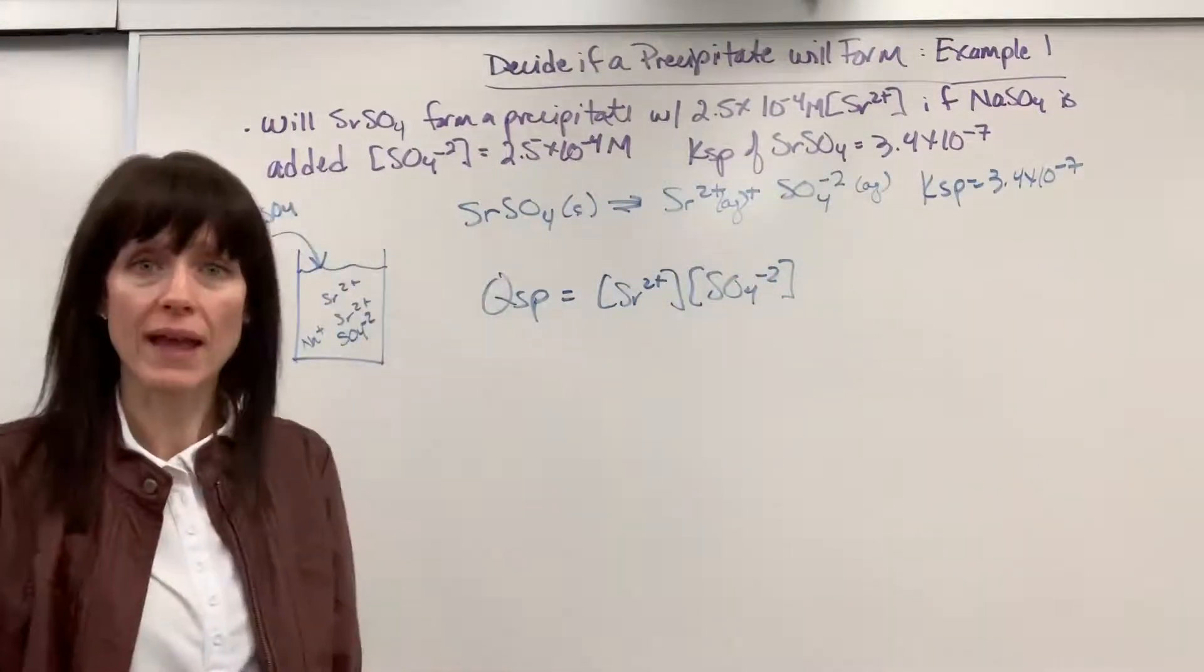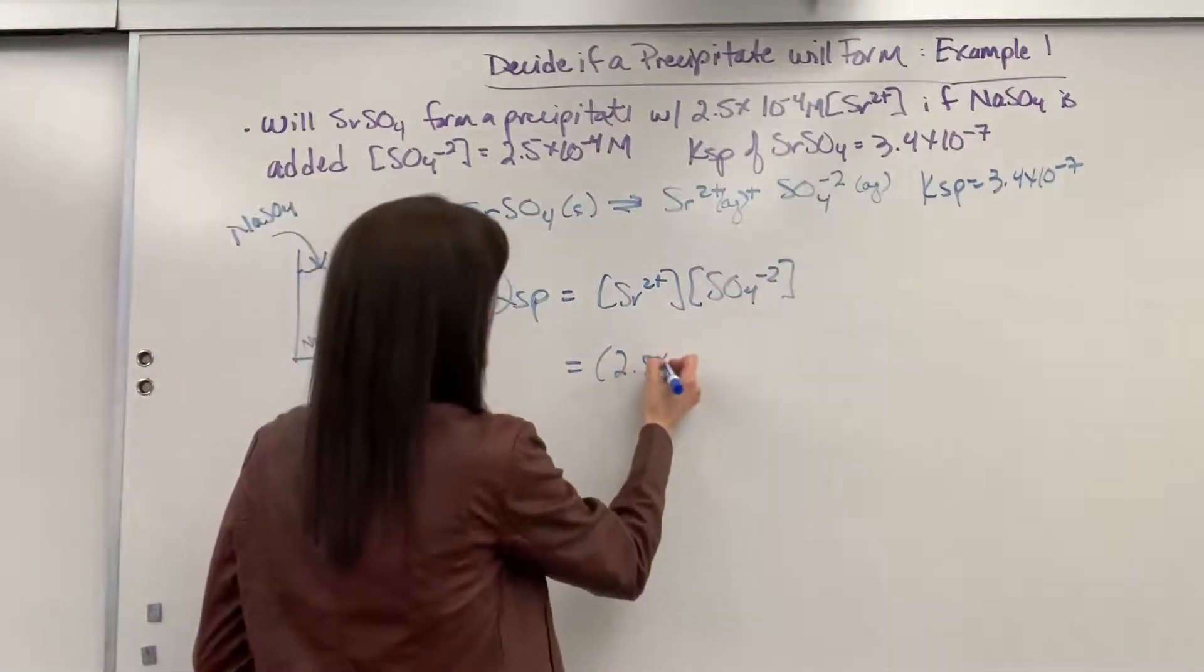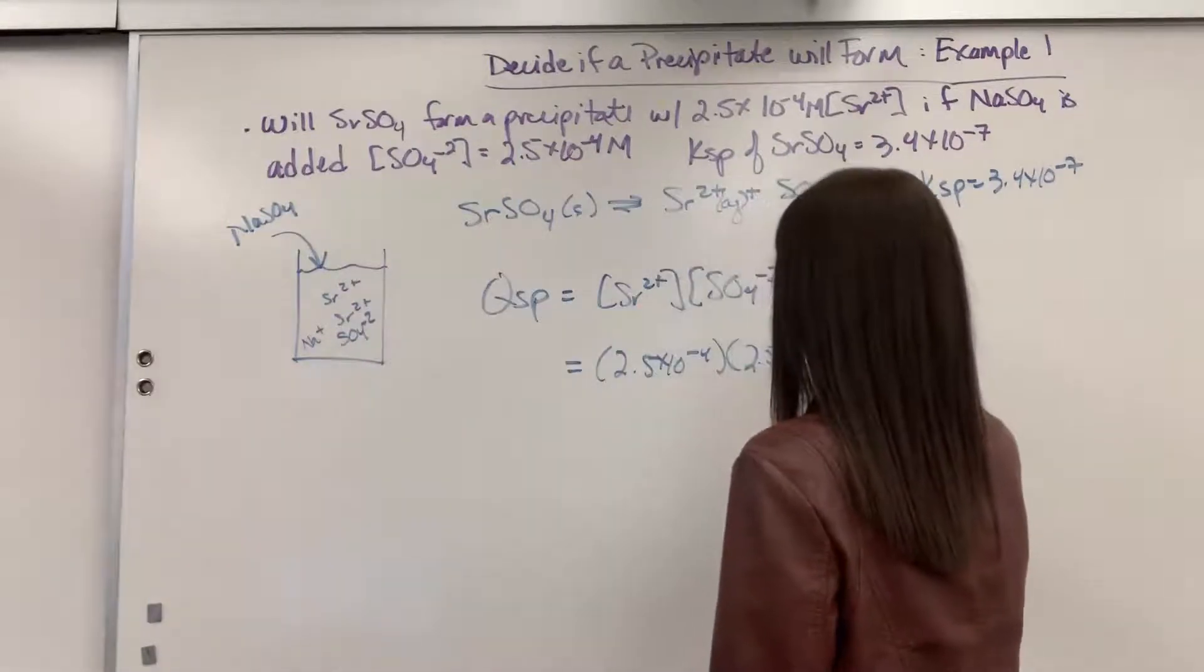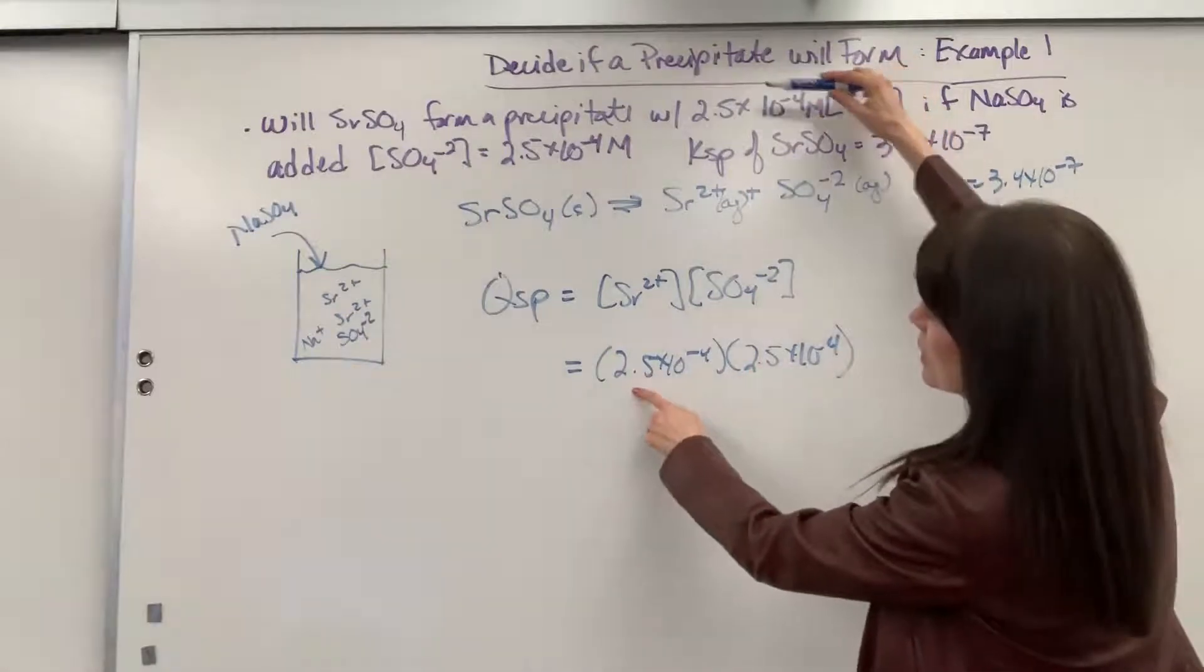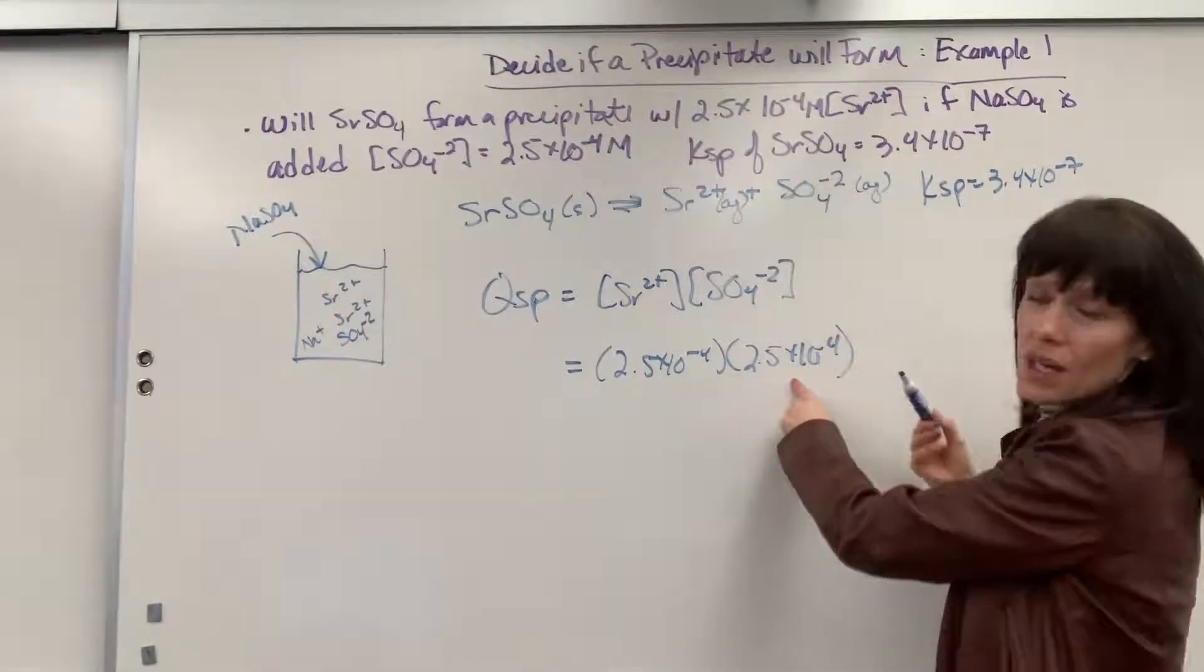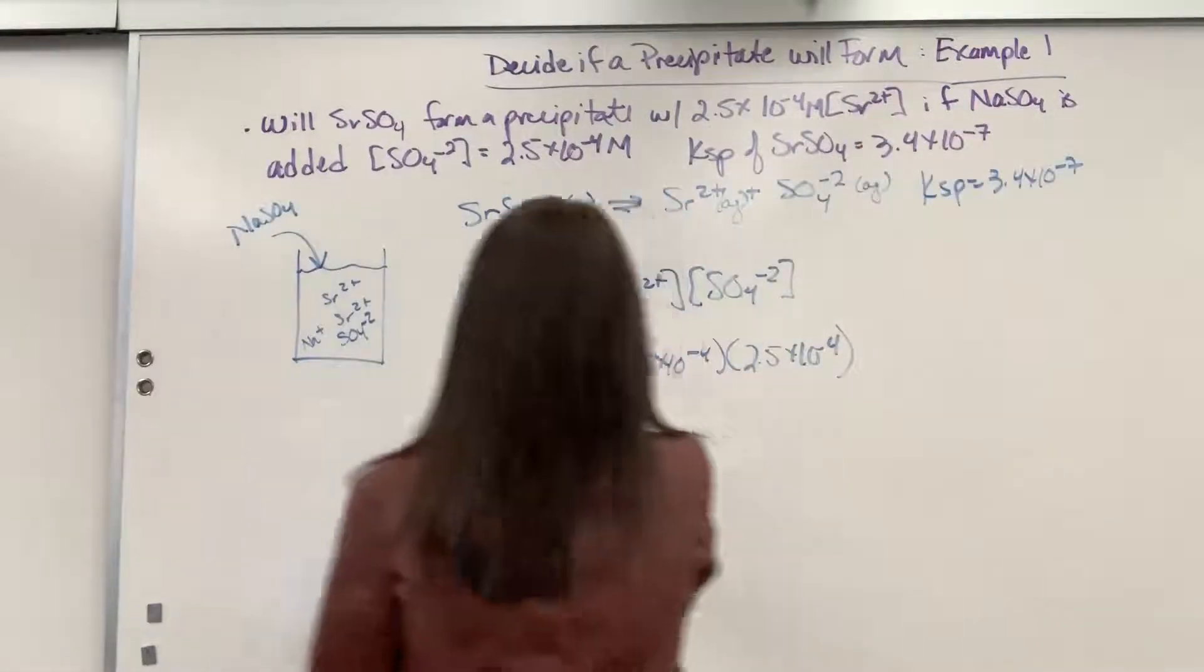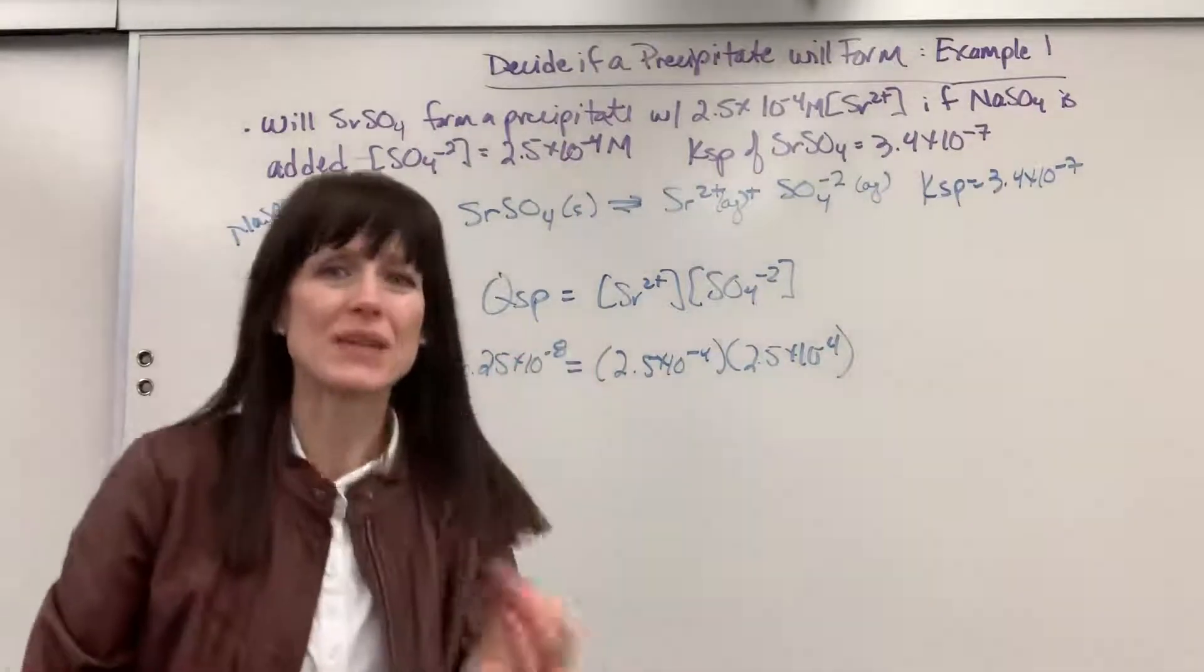So, let's go ahead and plug in what we have. At this moment, I have 2.5 times 10 to the minus 4 and 2.5 times 10 to the minus 4. So, here's the concentration of the strontium and there's the concentration of the sulfate. When we multiply this, we get 6.25 times 10 to the minus 8. Remember, that's Qsp.